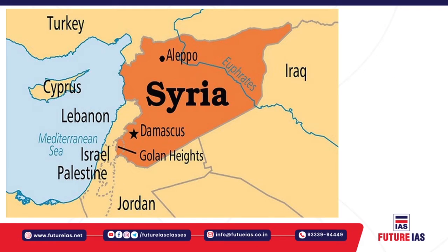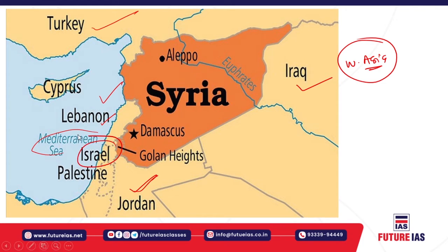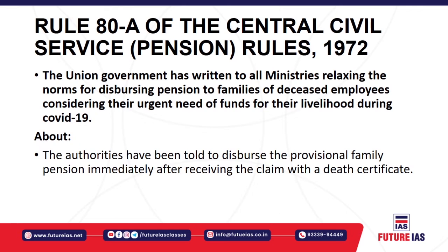Syria is a country in Western Asia. It borders Lebanon to the southwest, the Mediterranean Sea to the west, Turkey to the north, Iraq to the east, Jordan to the south, and Israel to the southwest — Israel being a country that also occupies some territory belonging to Palestine.